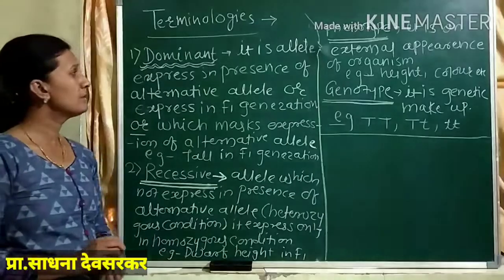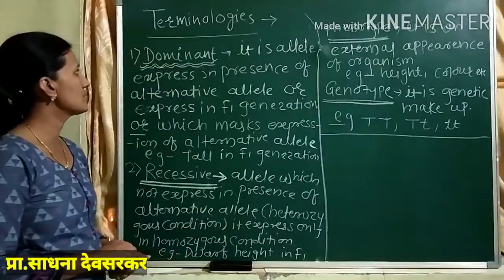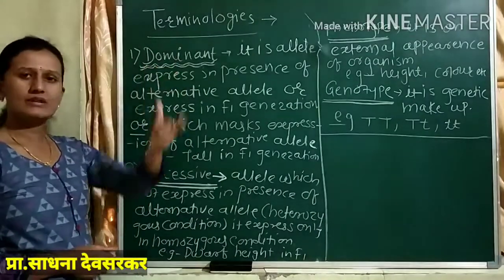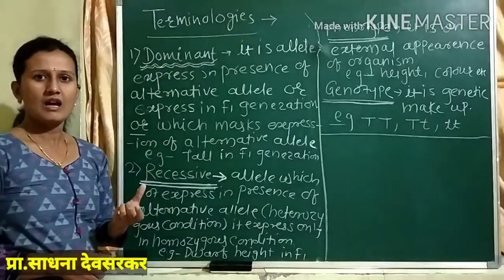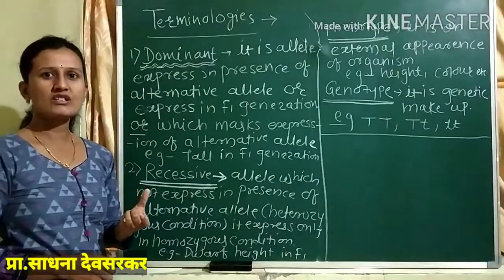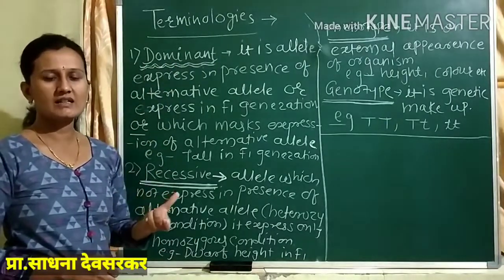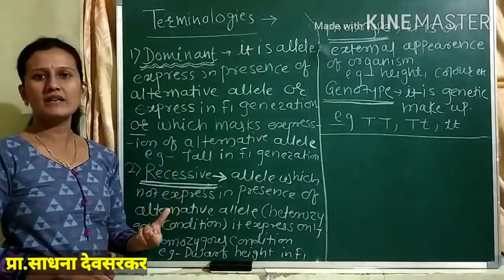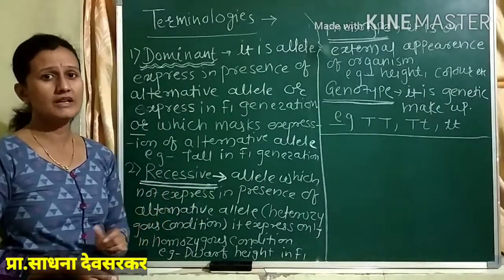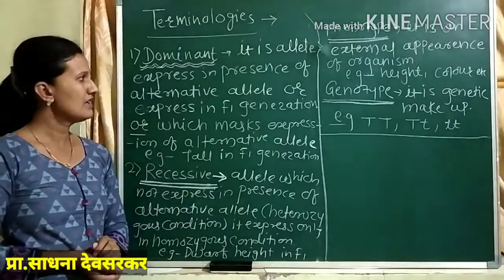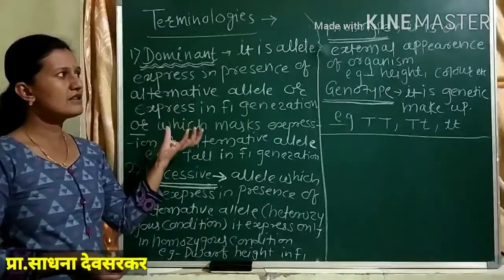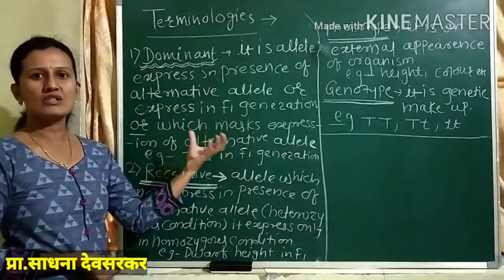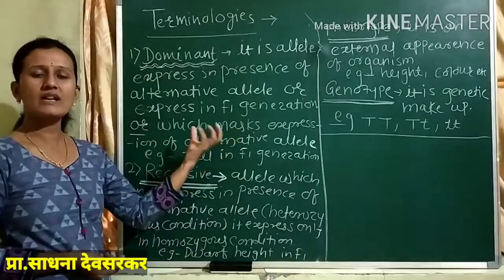The first definition is the dominant one. We learned some crosses — that is the monohybrid cross done by Mendel, and the dihybrid cross done by Mendel. But this is the prior knowledge for all those crosses, for all those experiments.